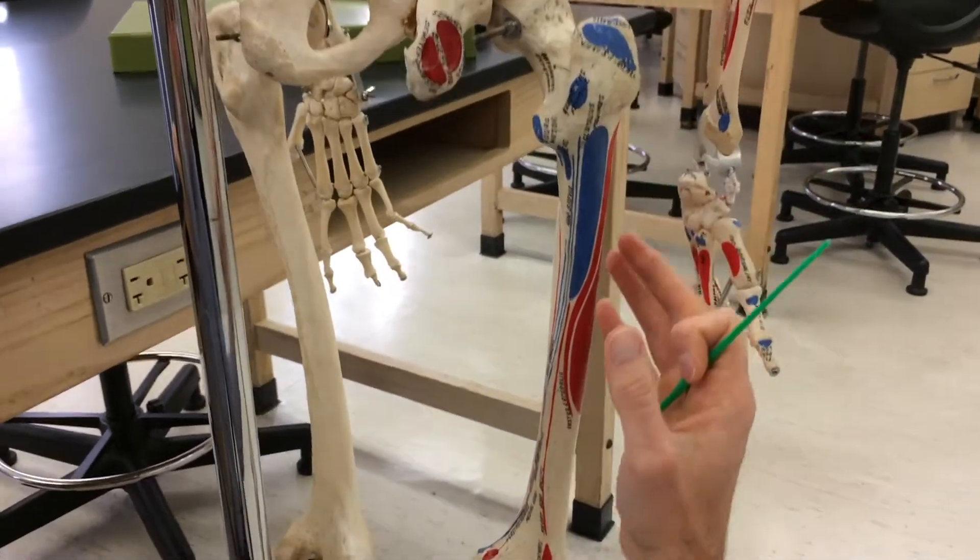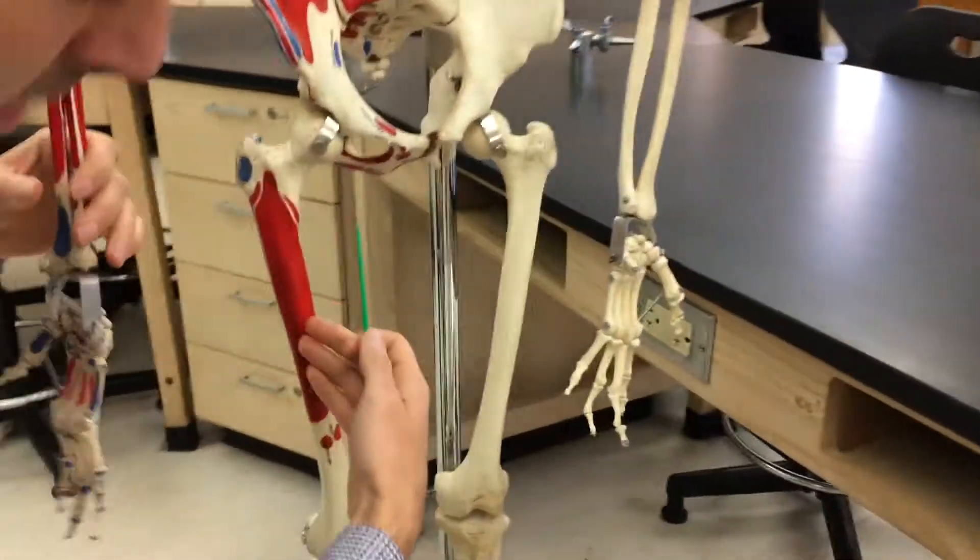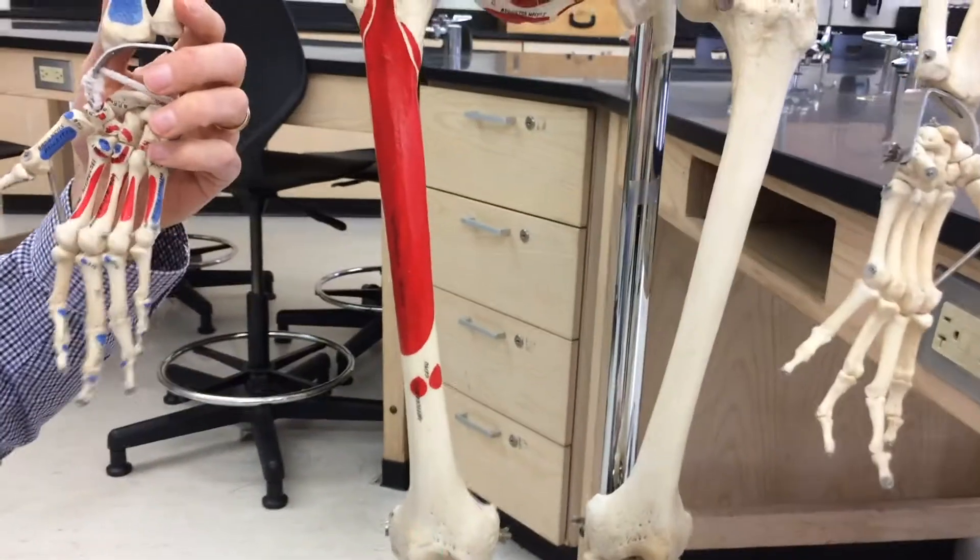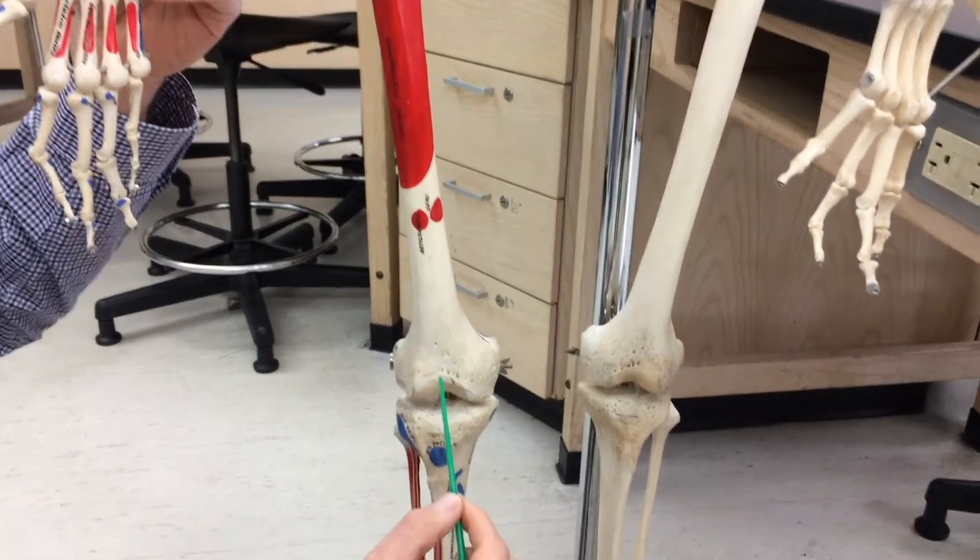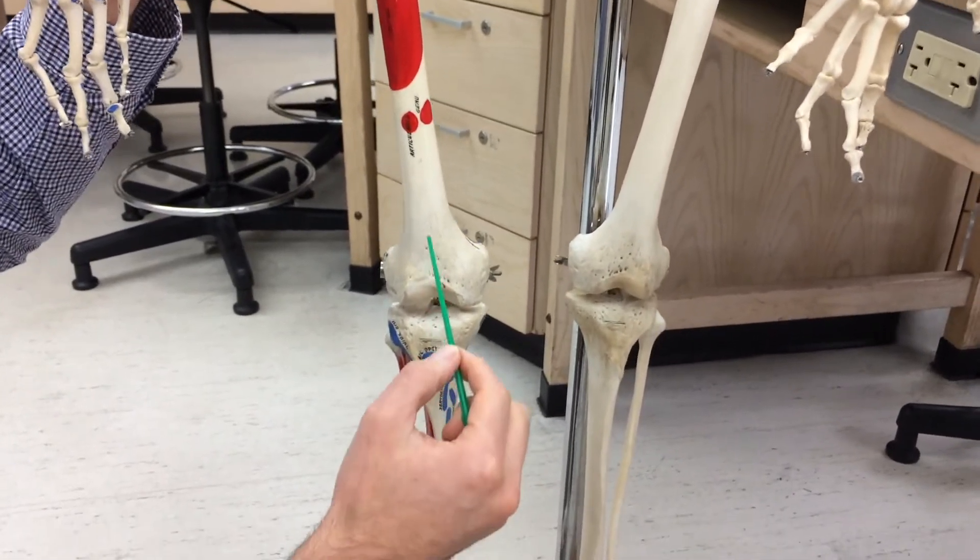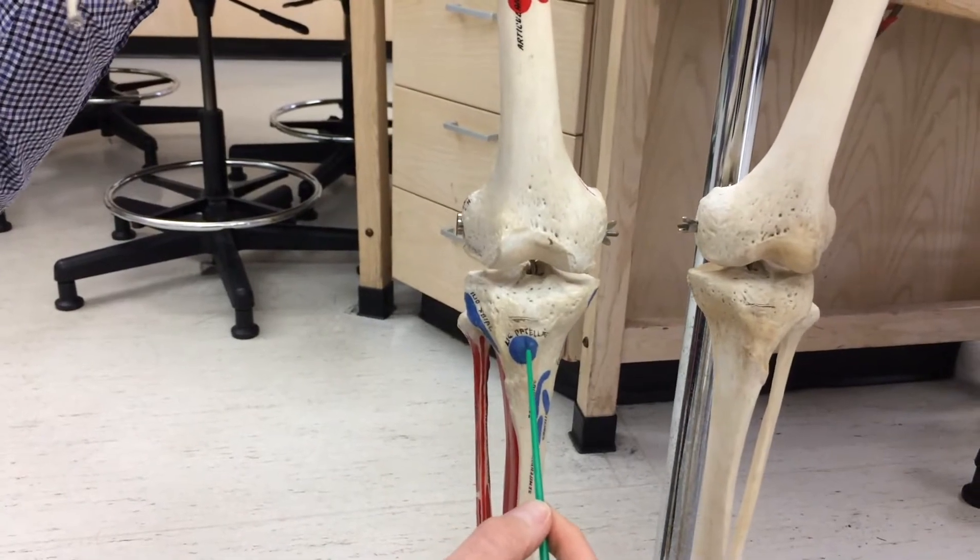So what happens is, we come down like this, we pass through the patella, which is not on the skeleton. But that patella has a patellar ligament that comes all the way down and grabs onto the tibial tuberosity.